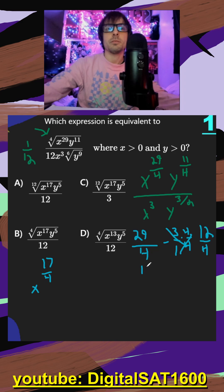For the y, it's going to be 11 over four minus three over two. Again, common denominators. So we multiply both by two, we get six over four. So 11 minus six is going to get us y to the five over four.